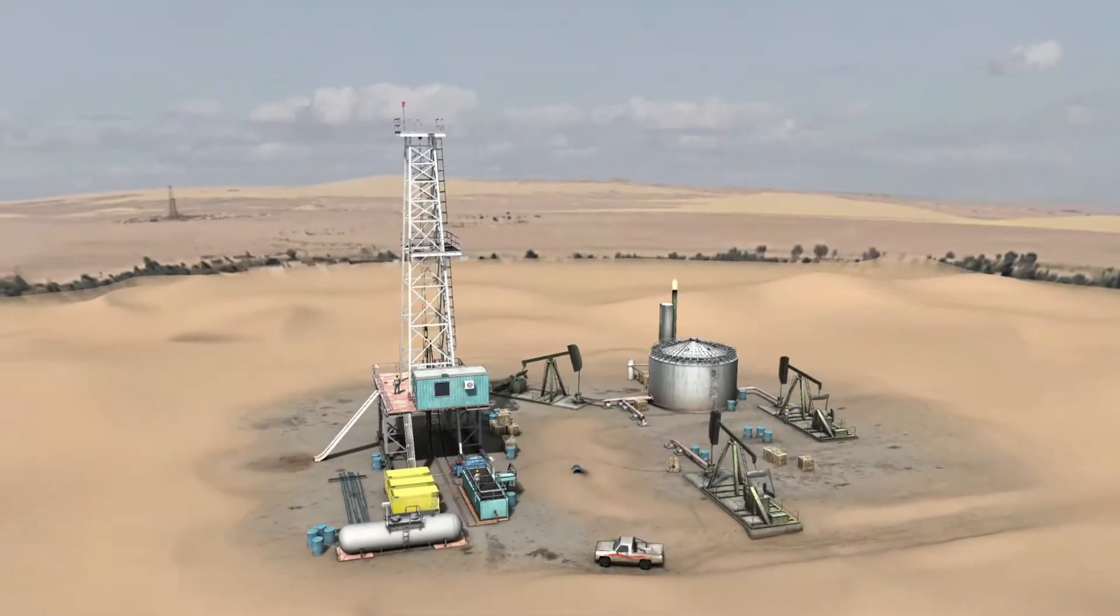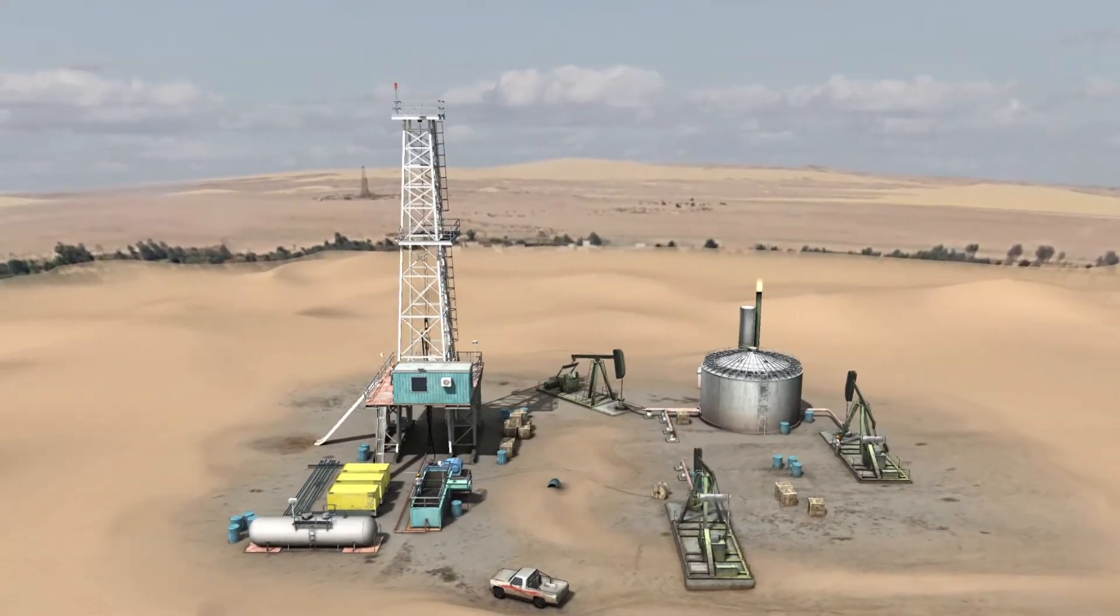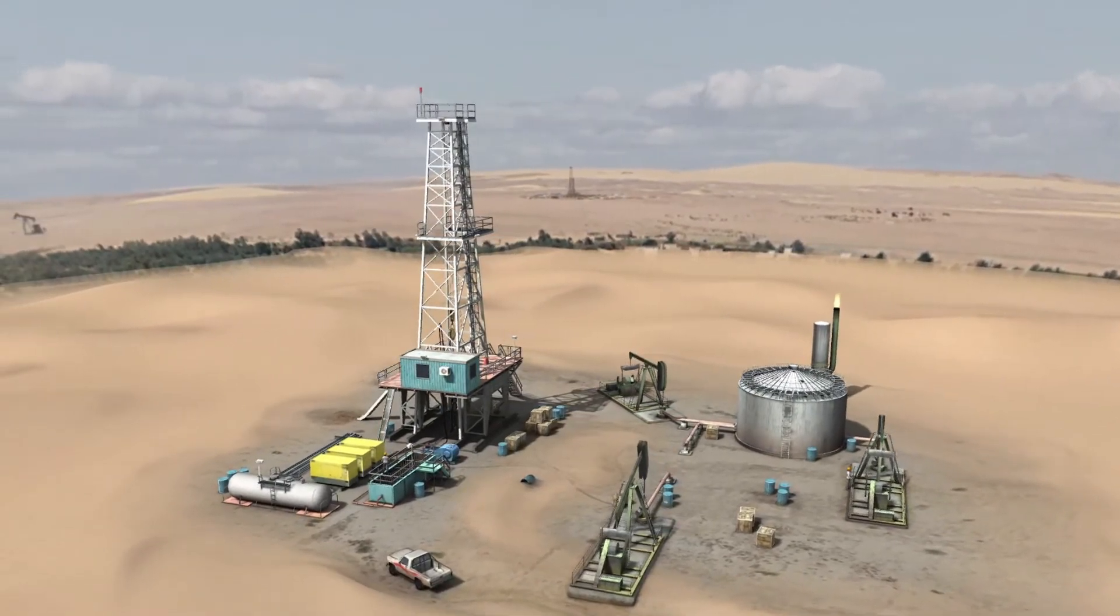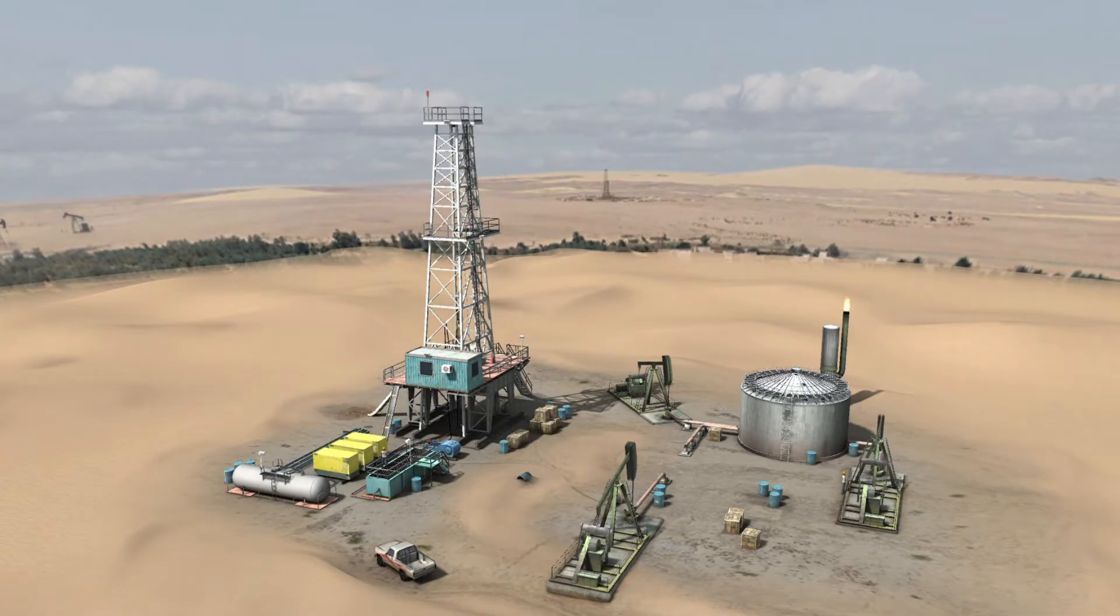The first step in oil reservoir exploration is to designate the place where the exploration drilling should be carried out. This is done with geographical mapping and geophysical measurements. The drilling rig is then set up to determine the actual properties and contents of the layers thousands of meters deep.